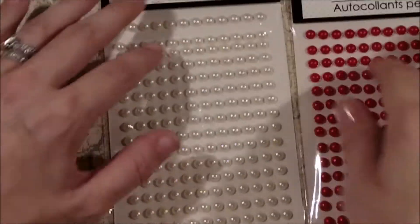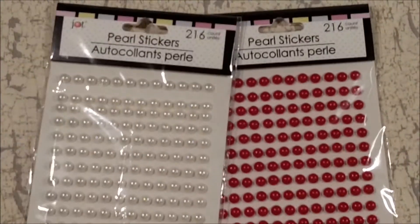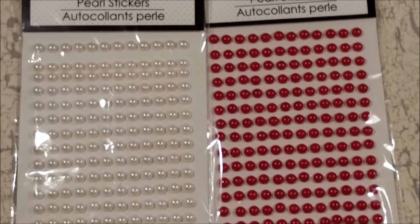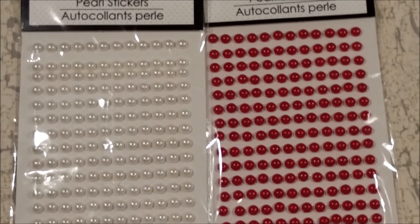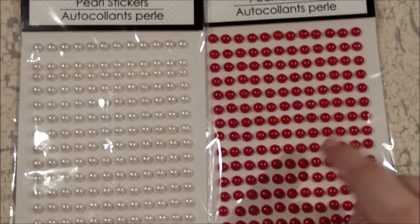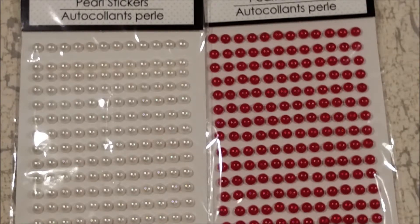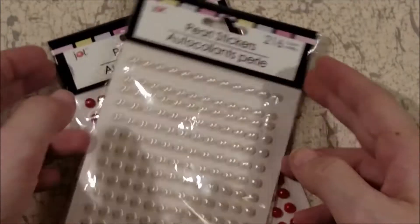Then I decided to grab these, which are the pearl stickers from Dollar Tree. I got the white and the red. The red because Christmas is coming and these would be great for cards, so I think these would be really nice. I figured they could look like little Christmas ornaments or maybe a tree stamp or something. We'll work on that, we'll see what I come up with.